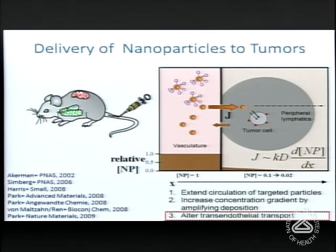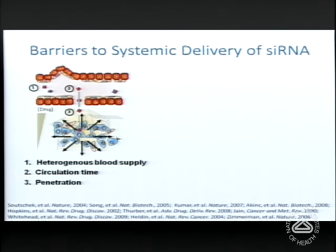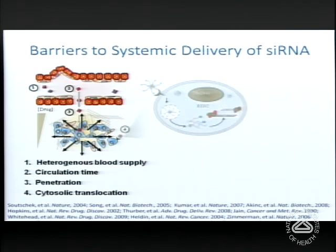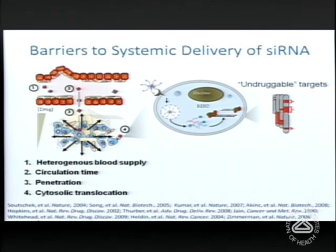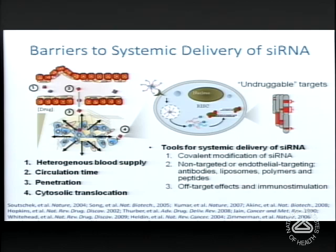I'll give one more example of increasing payload accumulation in tumors — siRNA. We altered trans-endothelial transport, the major barrier between the vascular space and the tumor interstitium. siRNA is an attractive cargo because by some estimates 80% of the proteome is currently undruggable, so as we do more cancer genomics we'll need to silence many targets. However, siRNA acts via the RISC complex in the cytoplasm, so it's not enough to reach the cell's vicinity — one has to get inside the cell, out of the endosome, and into the cytosol.